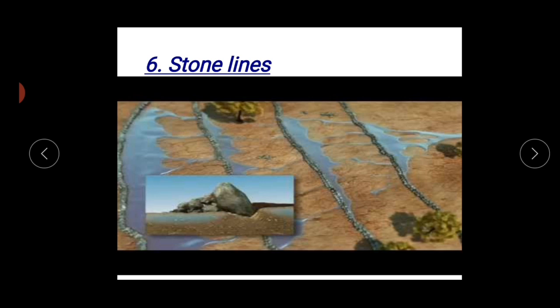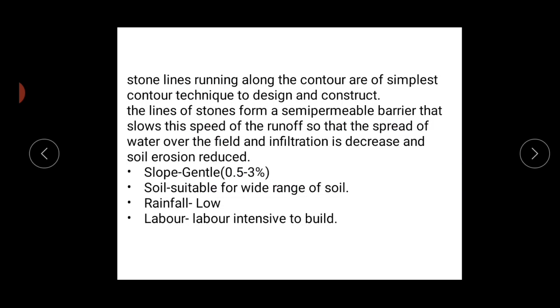For conditions with stone lines: it requires a gentle slope of 0.5 to 3 percent. Soil stability is needed for a wide range of soils. Rainfall can be low — about 350 mm to 750 mm. Labor is very intensive to build. A very wide range of crops can be grown. These are the techniques used for rainwater harvesting under contour farming.